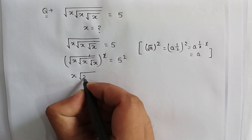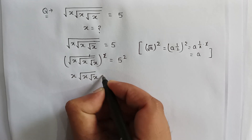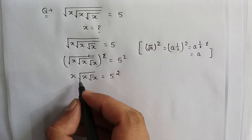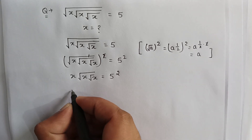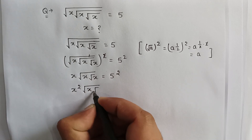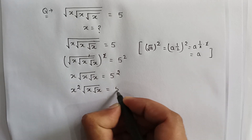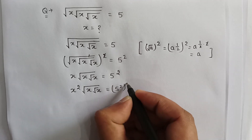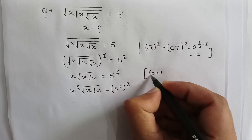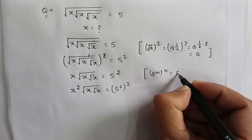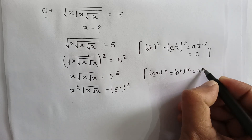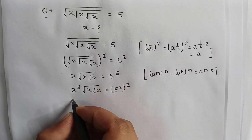So after squaring, it becomes x · √x · √x = 5². Squaring both sides again gives x² · √x · √x = 5^(2×2). As we know, if (a^m)^n is written, then it equals a^(m×n).